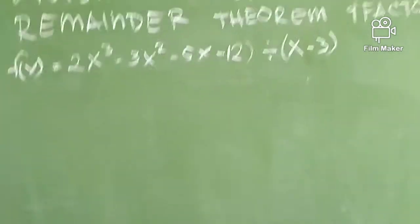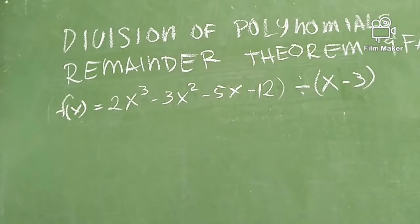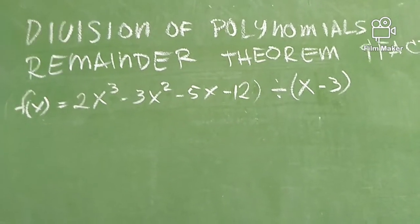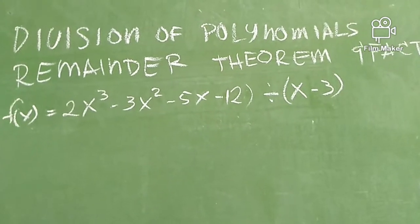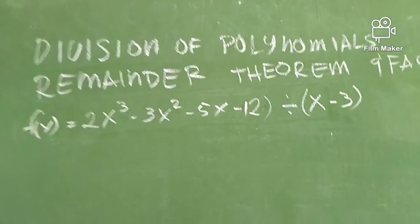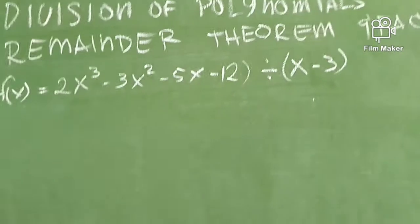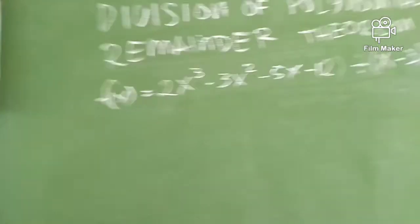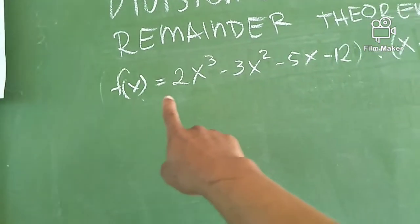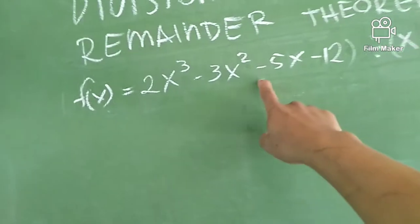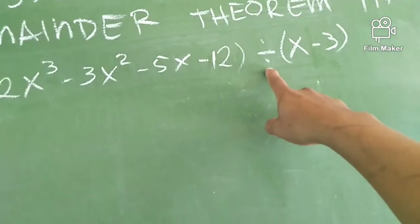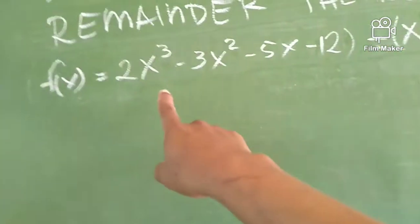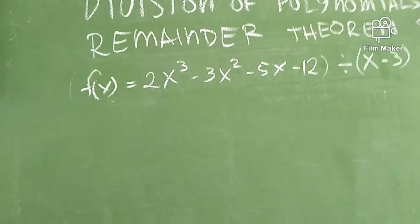We will use the same example used in the long division method, same true with the synthetic division — parehong-parehong problem. The difference is the theorem we will use: the remainder theorem or the factor theorem — but they are just the same. Given this polynomial function: f(x) = 2x³ − 3x² − 5x − 12 divided by x − 3. We are proving that x − 3 may be a factor of this polynomial, and from the previous videos, yes na po yung sagot natin.